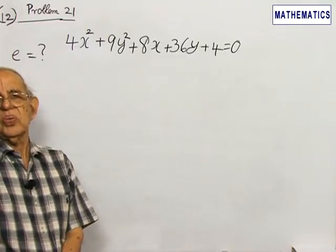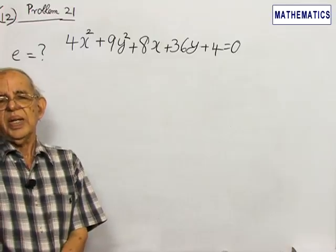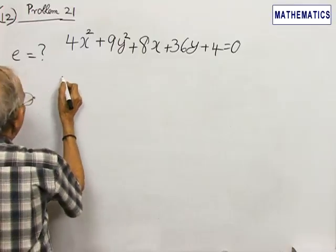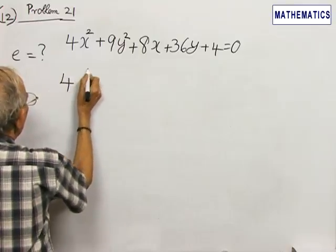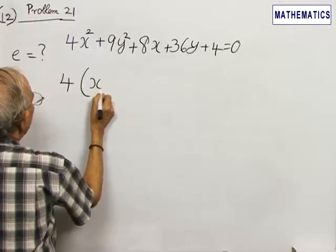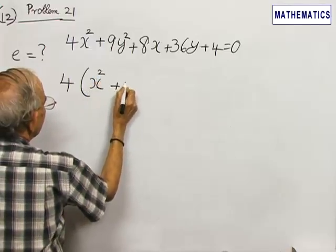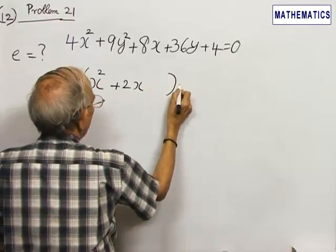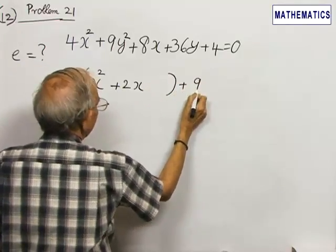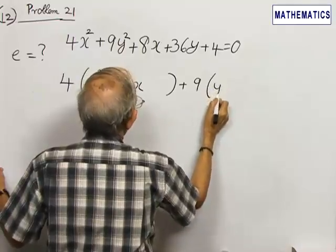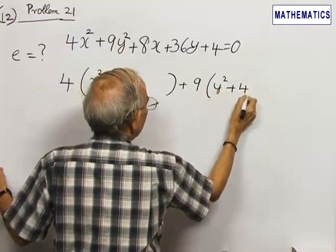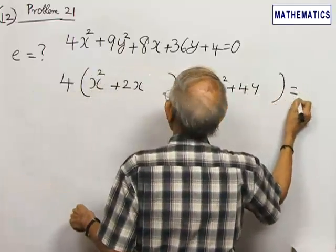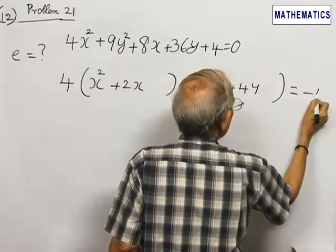We will reduce this ellipse equation into the standard form. So this can be rewritten as 4(x² + 2x) + 9(y² + 4y) = -4.